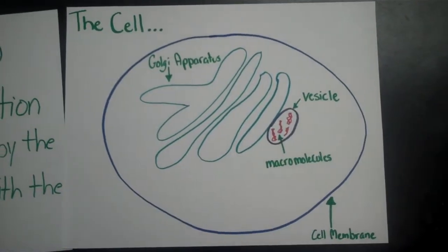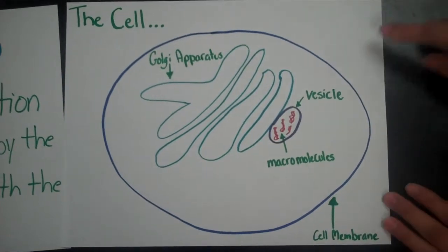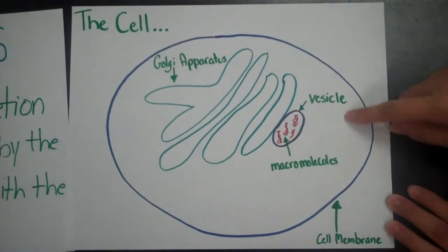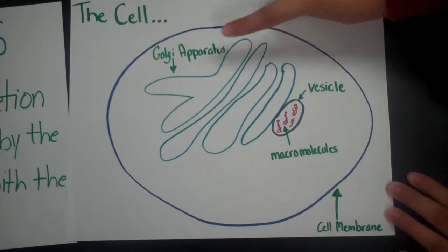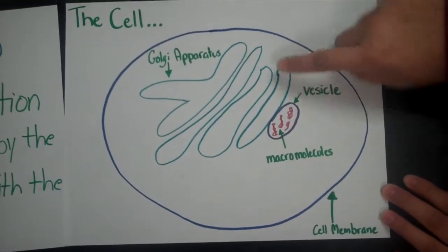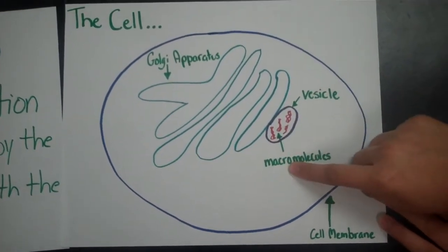Here is a diagram of the cell. Here is the cell membrane, the Golgi apparatus, the vesicle attached to the Golgi apparatus, and the macromolecules within the vesicle.